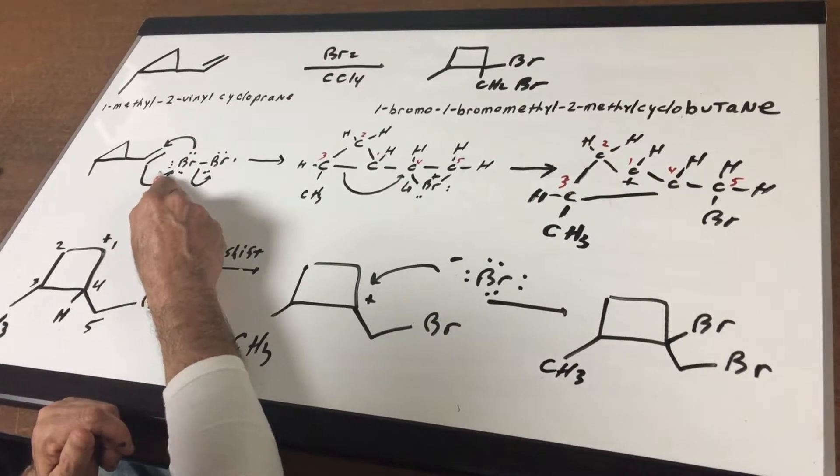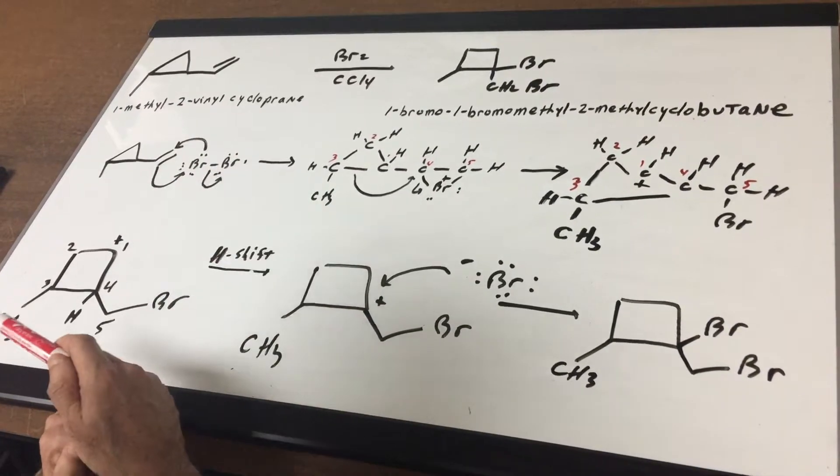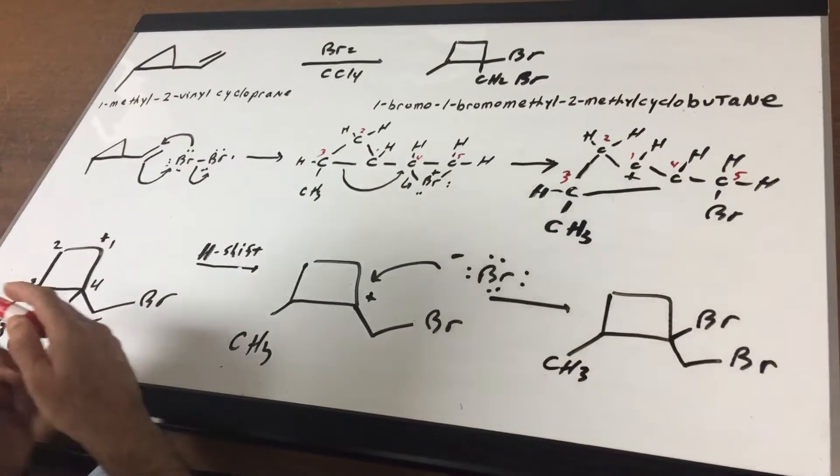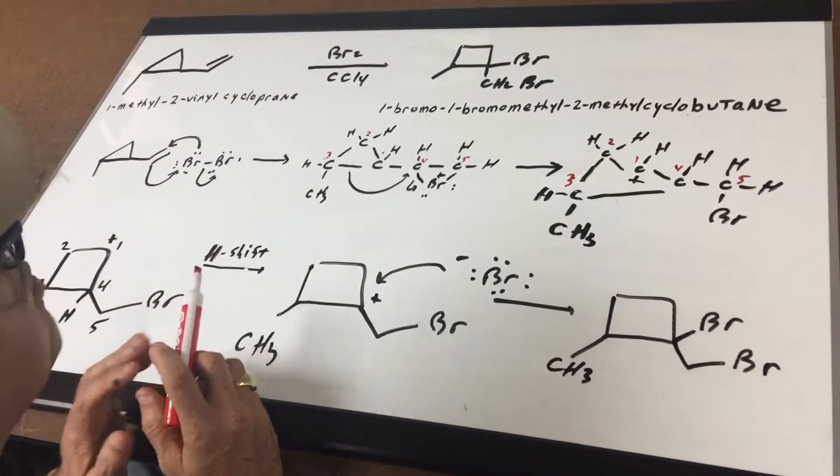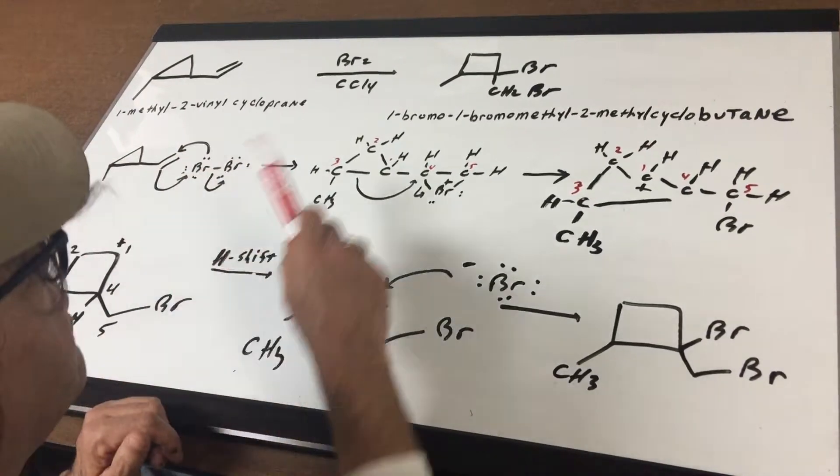Now I think the best way to do this problem is to take it out of the bond line and write out all the carbons so you can see it.